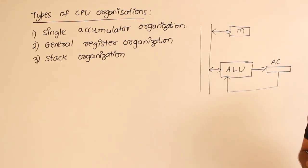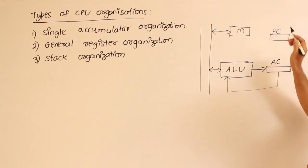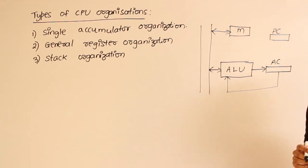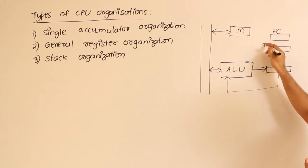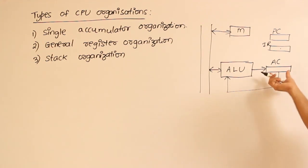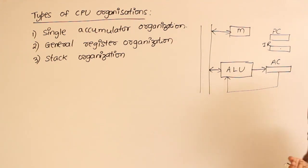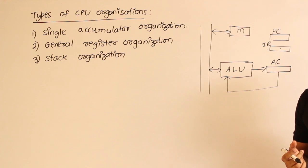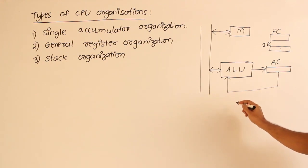This is the simplest type of architecture where we don't have a lot of registers — only a few. Some other registers that will be present are the program counter, which tells what is the next instruction to be fetched from memory, and the instruction register, which gets the instruction, saves it so it can be interpreted, and control signals can be given. This type of organization is called single accumulator organization.